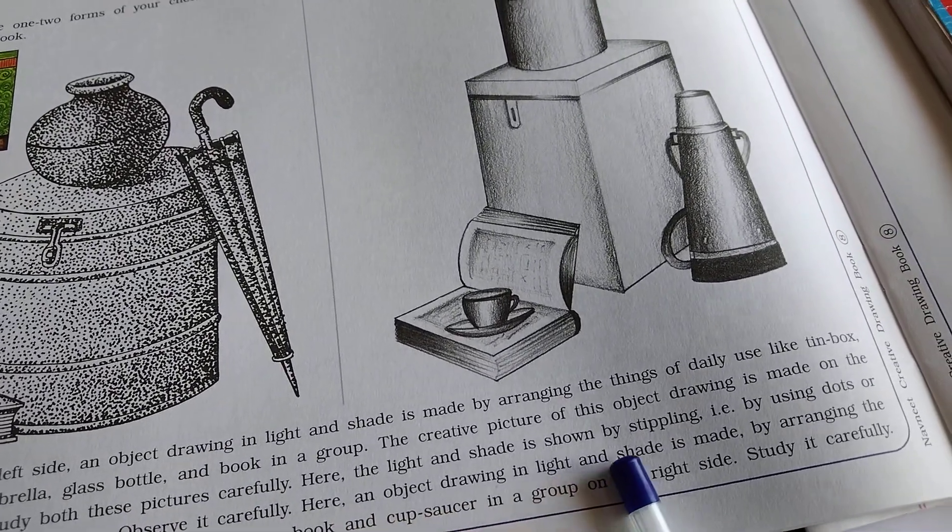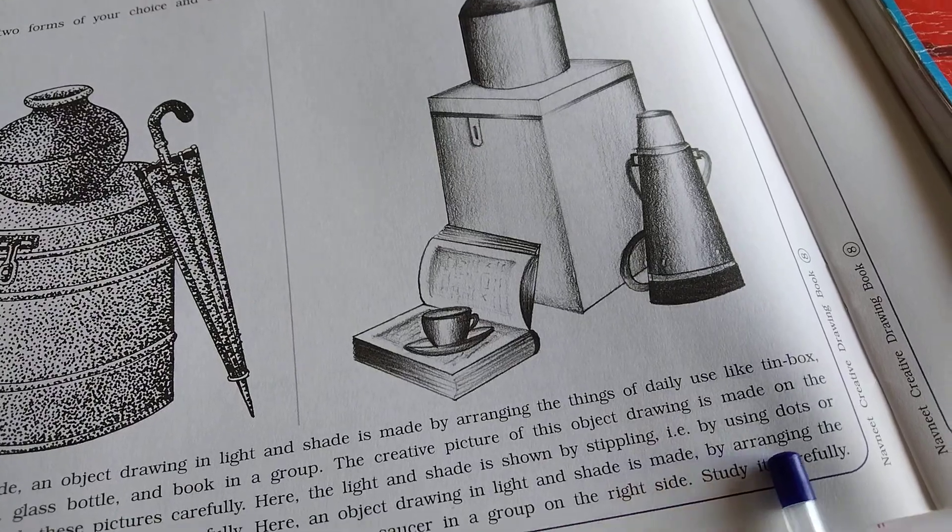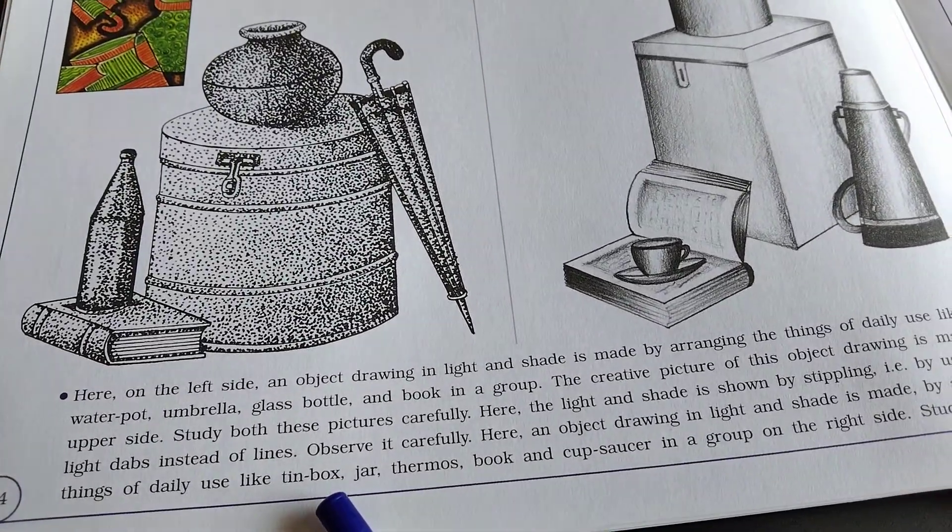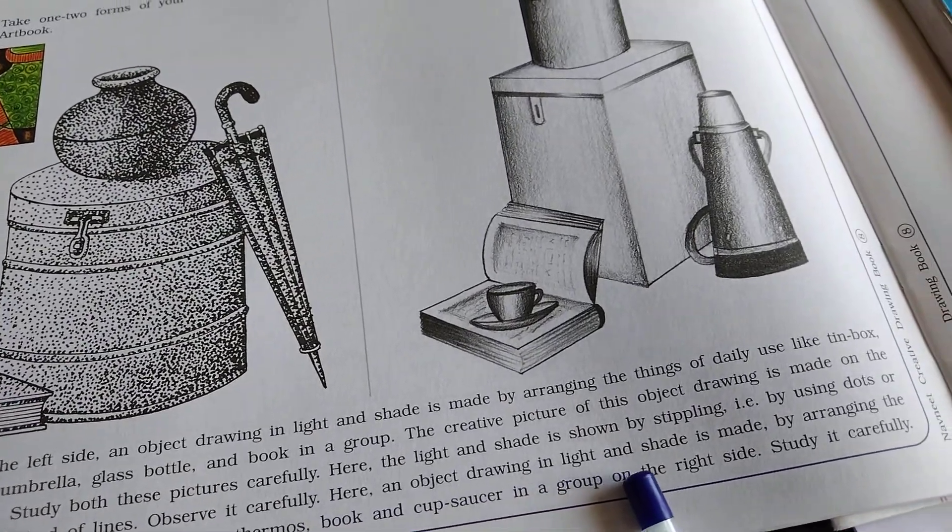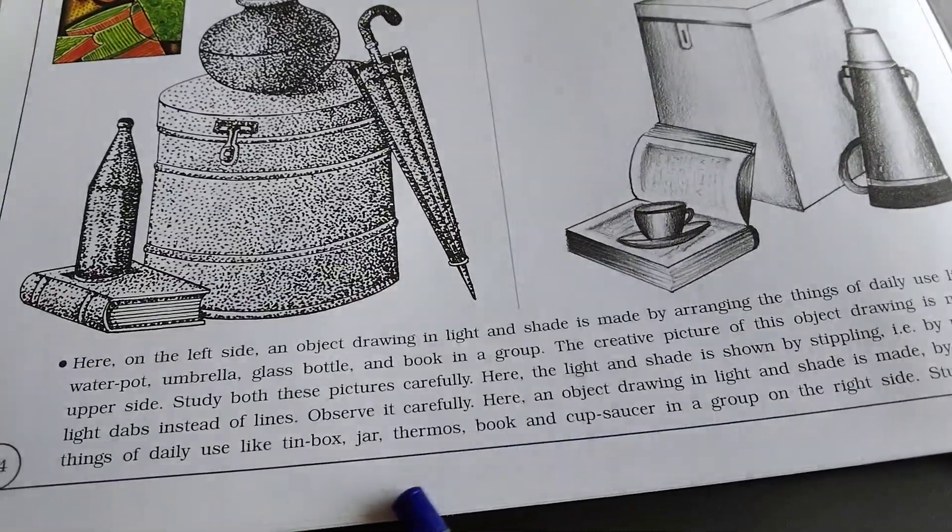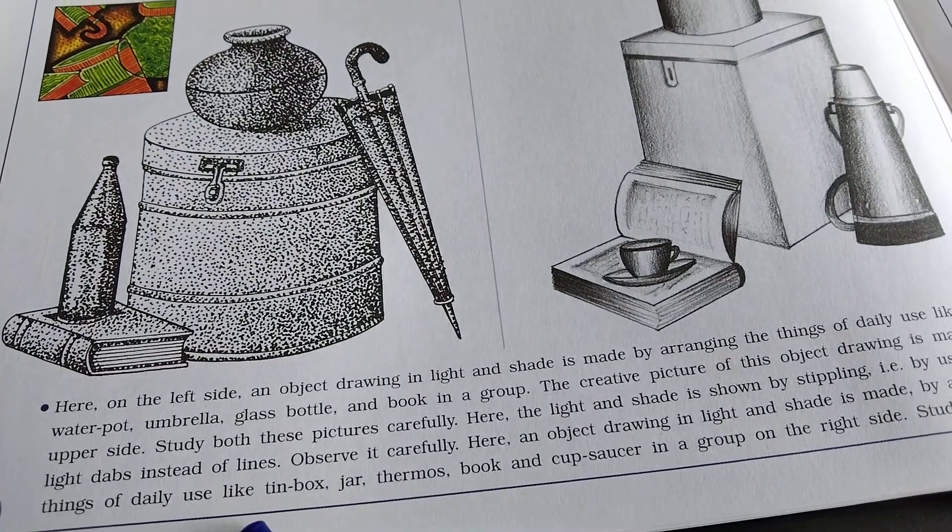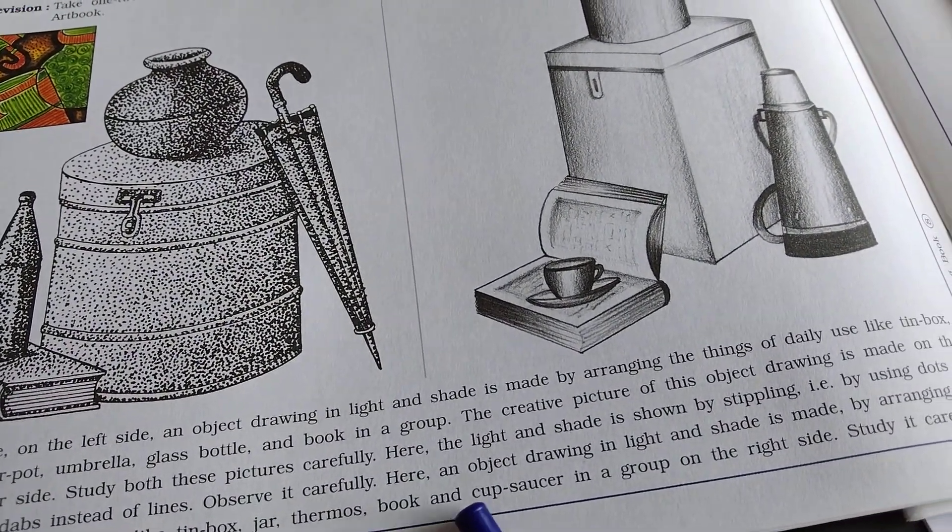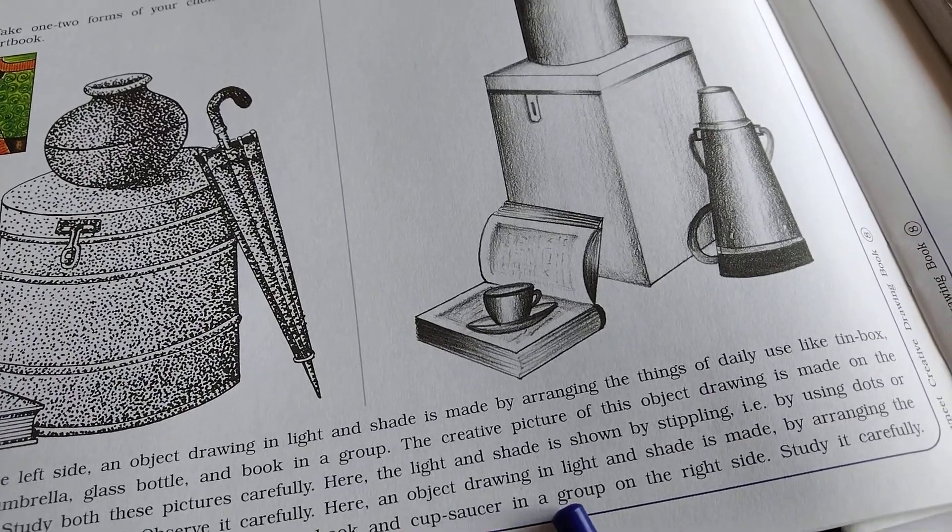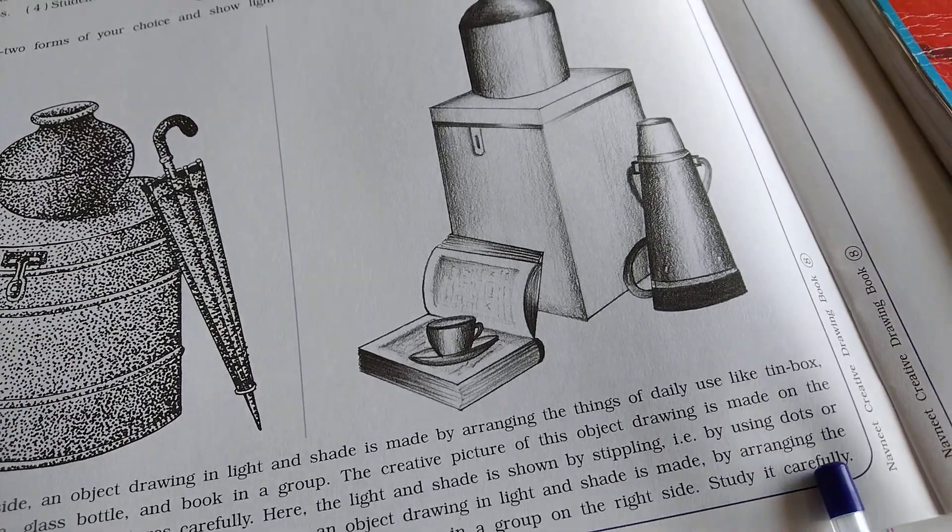In this drawing, the light and shade is made by arranging lines instead of dots. Observe here, object drawing in light and shade is made by arranging things of daily use like tin box, jar, thermos, book, and cup-saucer in a group on the right side. Study it carefully.